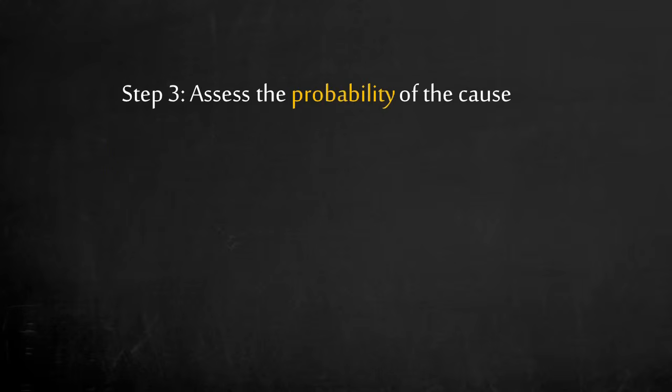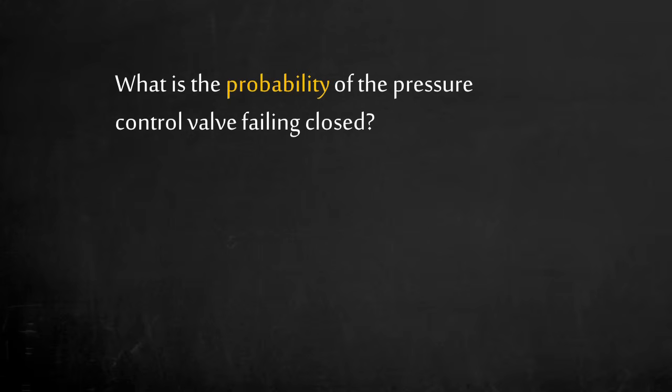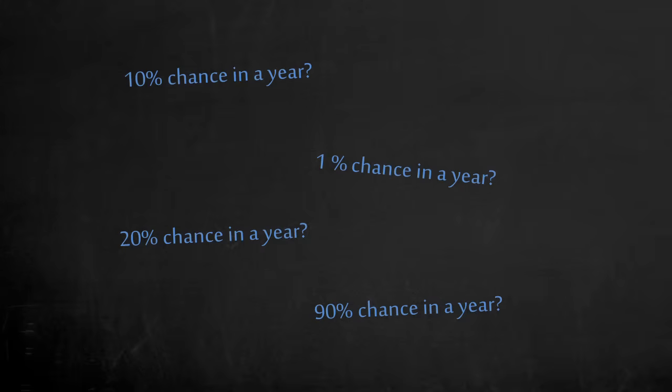Step 3: Let's assess the probability of the pressure control valve failing closed without safeguards. The probability of the pressure control valve failing closed includes all possible root causes, such as logic controller or sensor output error. Based on different operating and engineering experience, there may be different opinions. Is it 10% chance in a year, 1% chance in a year, 20%, or maybe 90% chance in a year? The HAZOP team needs to reach a consensus.